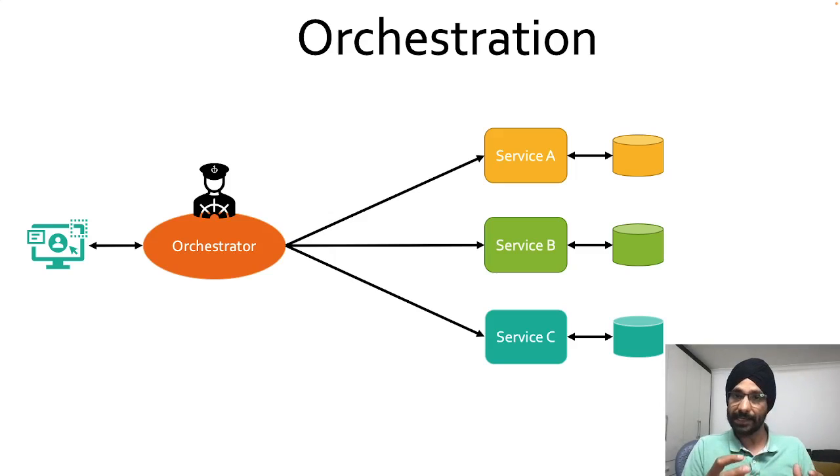After that, once Service A is successful, it will be making another request to Service B and it will just continue like that. Now let's just say if Service A is successful, Service B is successful, Service C is successful, everything is good. We can reply back to our client that okay, I have now committed transaction in all the distributed services.